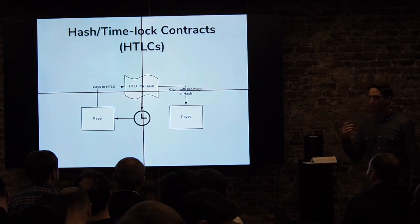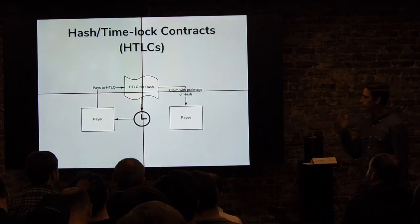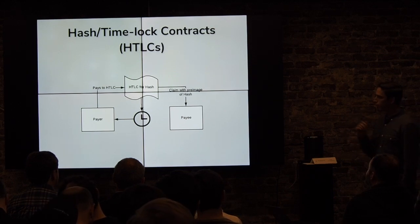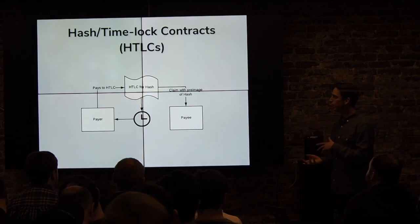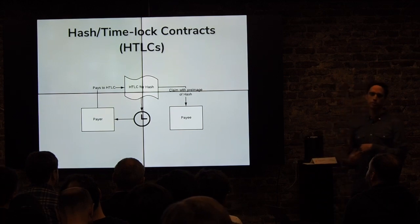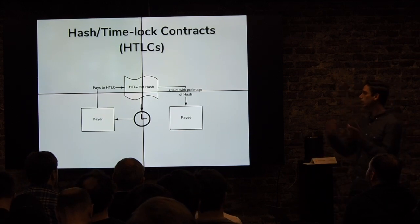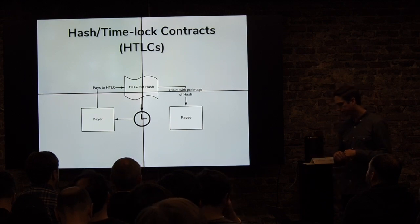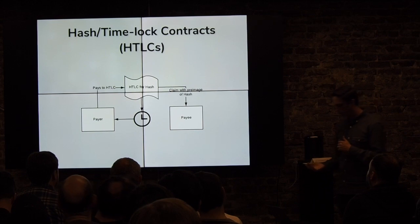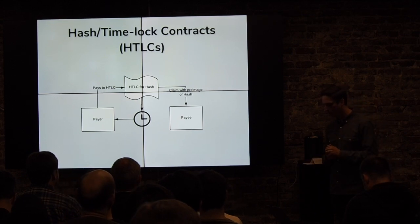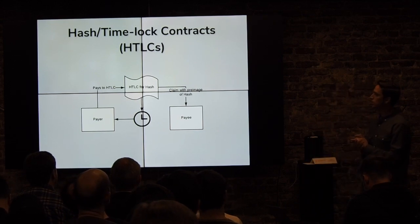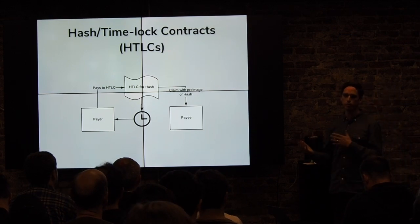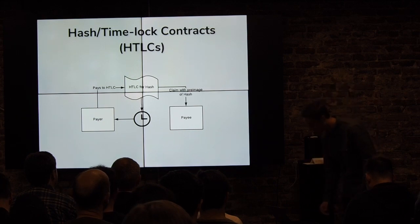HTLCs — I think most people here know how these work. This is what all the payments in Lightning are. The person who's paying pays into this contract that allows them to either refund it back to themselves after a time lock, or if the payee reveals the pre-image for the hash, they can claim that payment for themselves. Every payment on Lightning does this, and really the way I think about it is as soon as this HTLC is set up, it's an irrevocable promise of payment, which is actually an extremely unique instrument that we really haven't seen before.